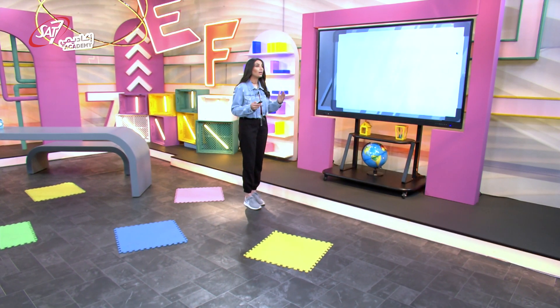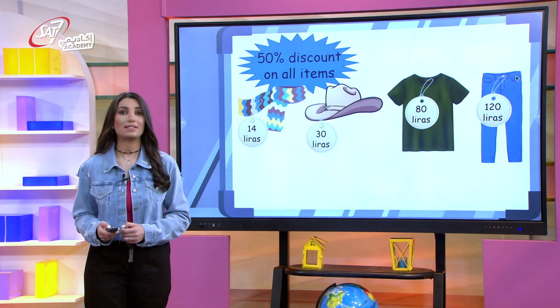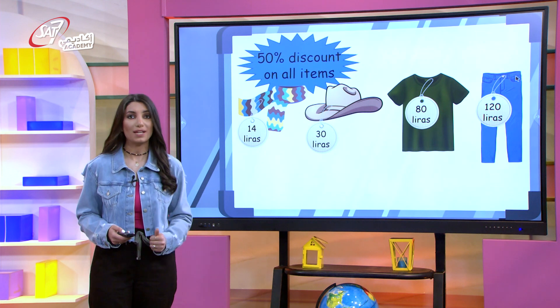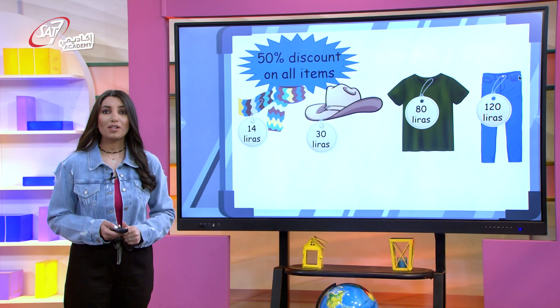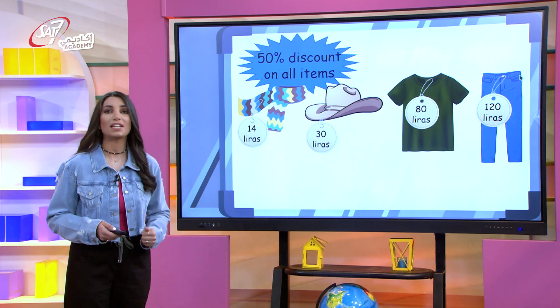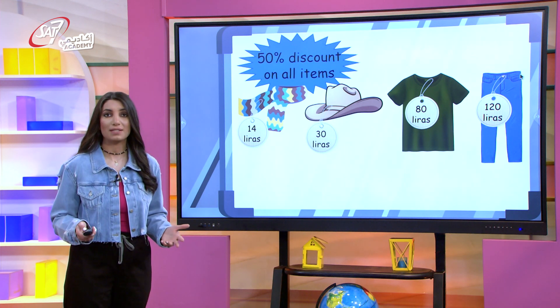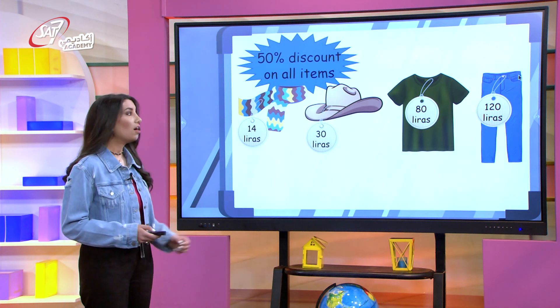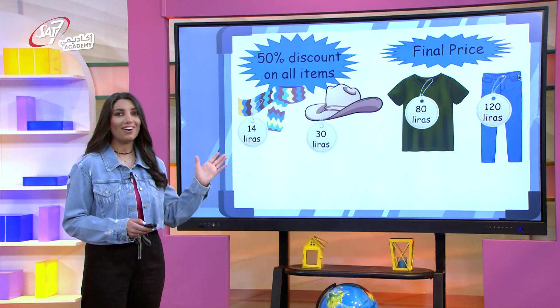At the mall, Salim entered a store that had a 50% discount on all items. Can you help him calculate the final prices? When an item is on 50% sale, we just need to pay half the price. To find half a number, we divide by 2. 14 divided by 2 equals 7 — the final price of this scarf is 7 liras. After the discount, the hat becomes 15 liras, since half of 30 is 15. 50% of 80 is 40, and 50% of 120 is 60, since 60 multiplied by 2 equals 120. Here are the final prices.